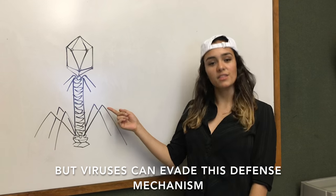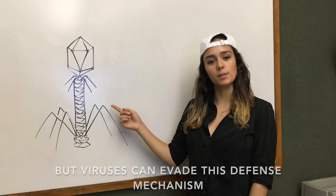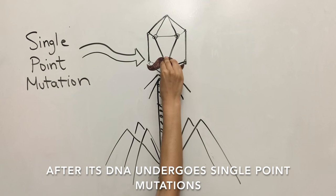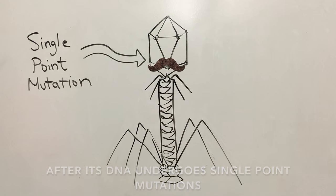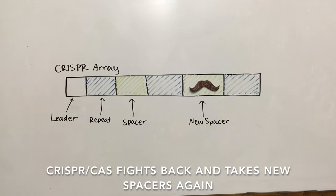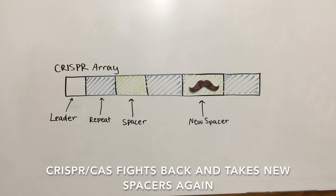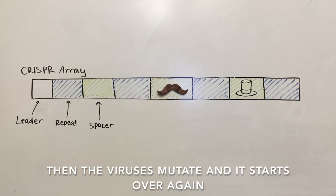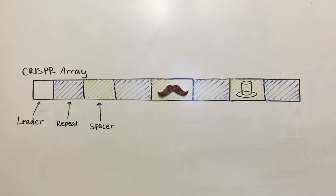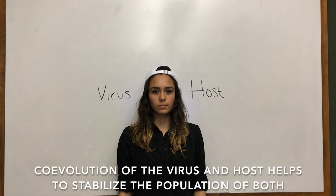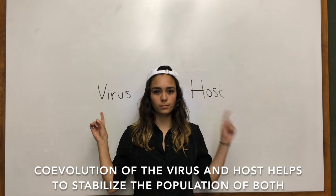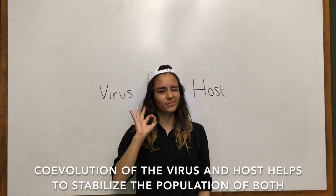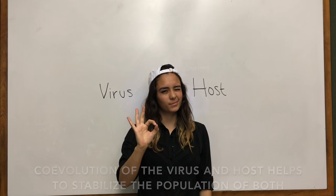But viruses can evade this defense mechanism after their DNA undergoes single-point mutations. CRISPR-Cas fights back and takes new spacers again. Then the viruses mutate and it starts over again. Co-evolution of the virus and host helps to stabilize the population of both.